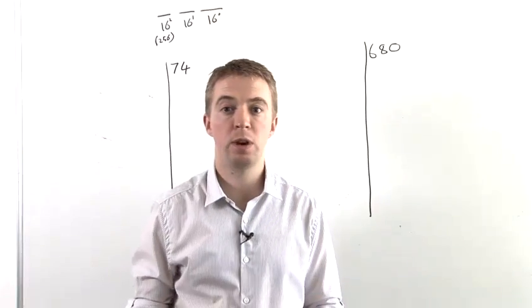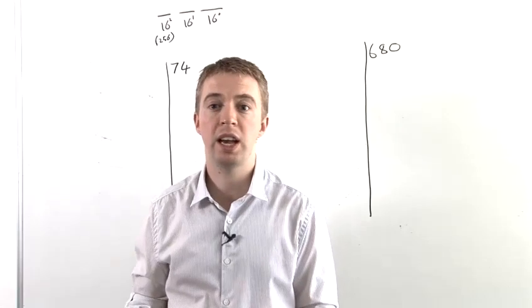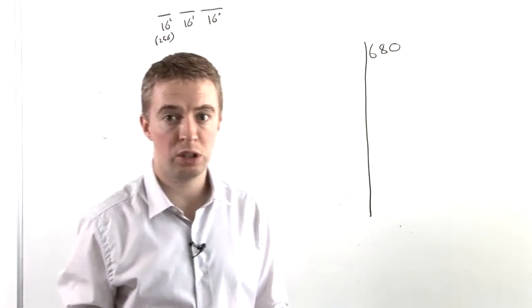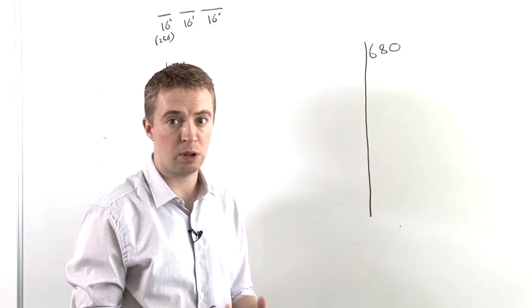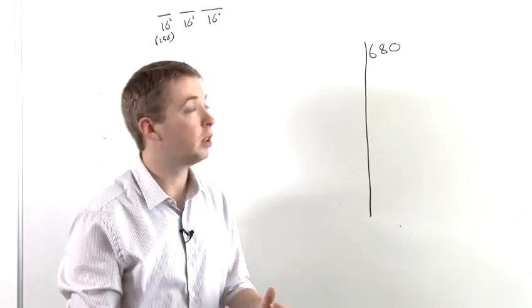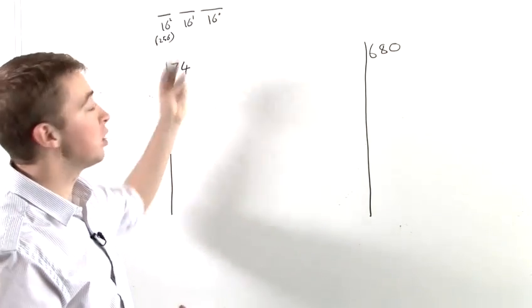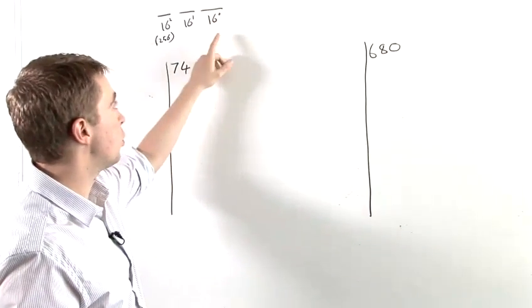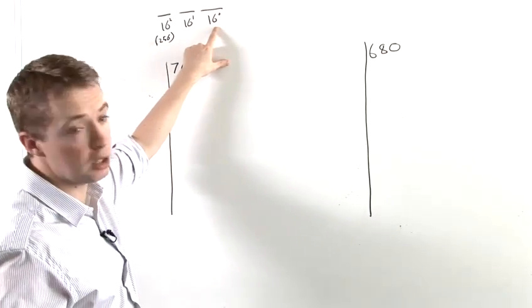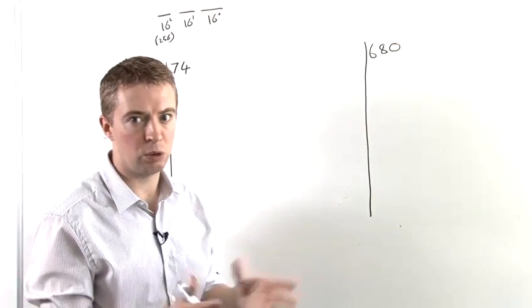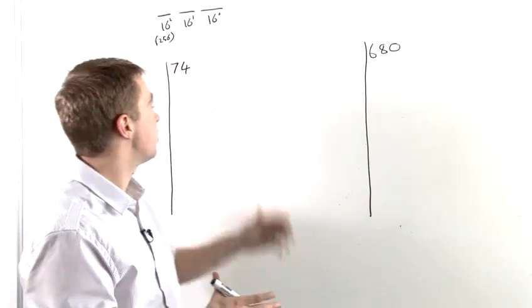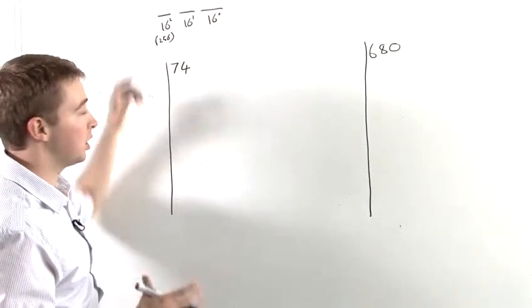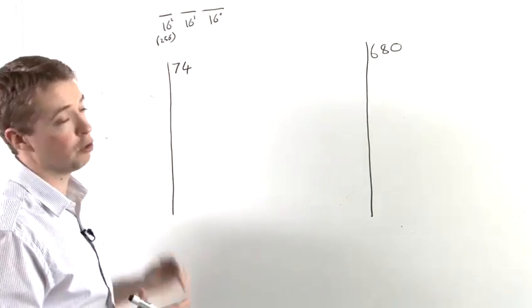We're now going to look at how to convert a decimal number into a hexadecimal number. So, the first thing to do is just briefly go over what a hexadecimal number, what its digits mean. We're only going to look at three-digit hexadecimal numbers at the moment. The first digit represents units, 16 to the power of 0, which is 1, that represents units. The second digit represents 16s, and the third digit represents 16 to the power of 2, which is 256.